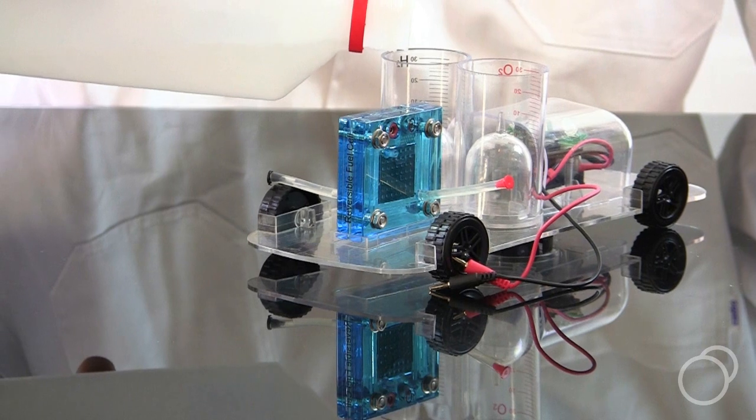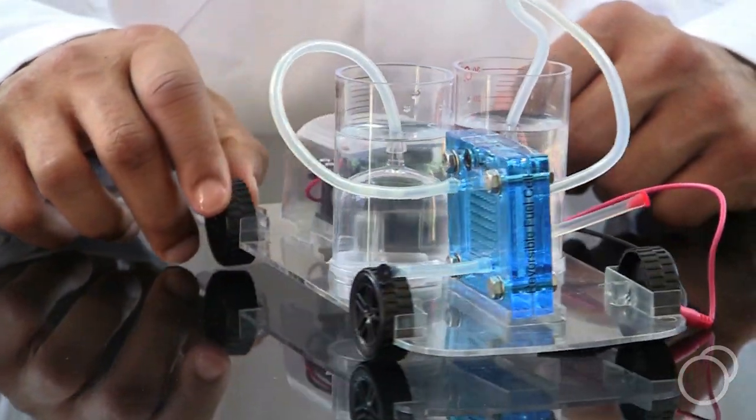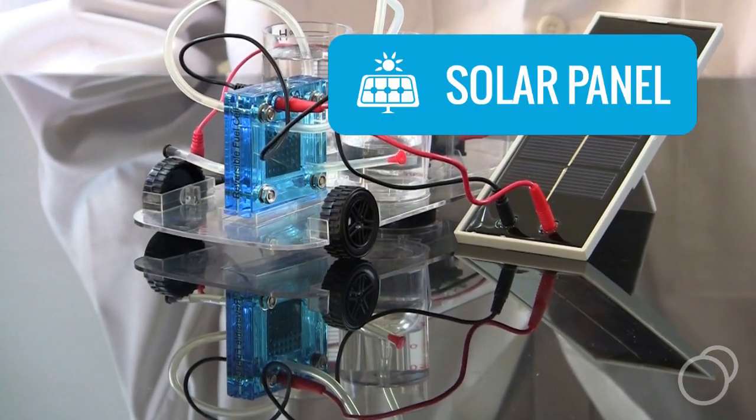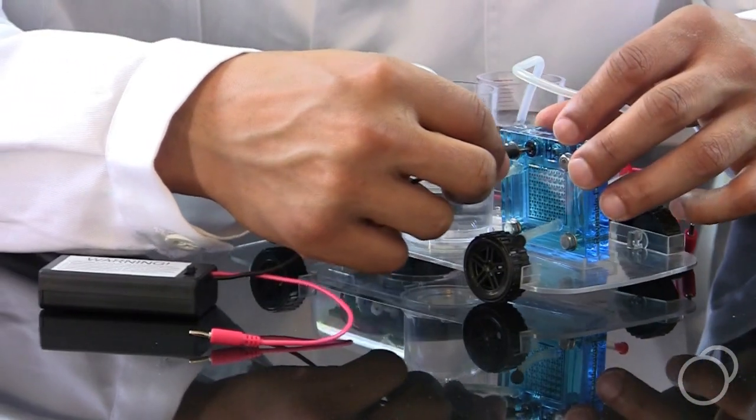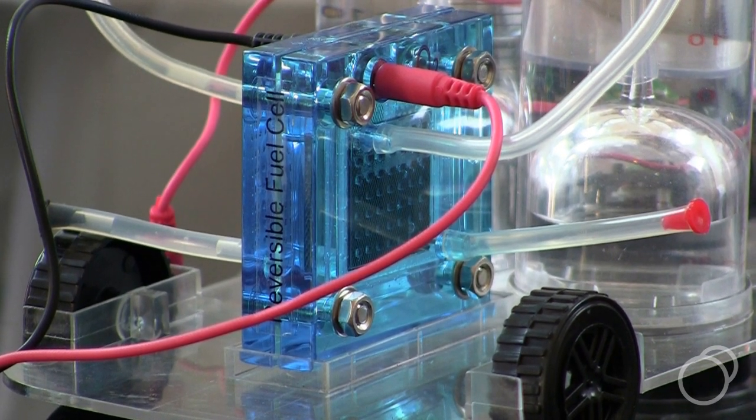Once assembled, the Fuel Cell Car Science Kit needs only distilled water to run. It makes its own hydrogen by splitting the water molecules using the energy from a solar panel or battery pack, both included with the car. The hydrogen and oxygen are stored in separate containers on the car itself.